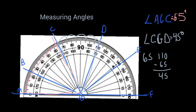And we'll do one more. So let's say we want angle BGE. So we'll look at B, B is at 24 degrees, E on the outside numbers is at 142.